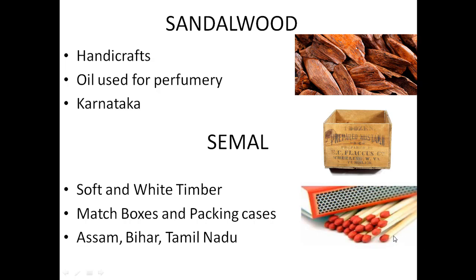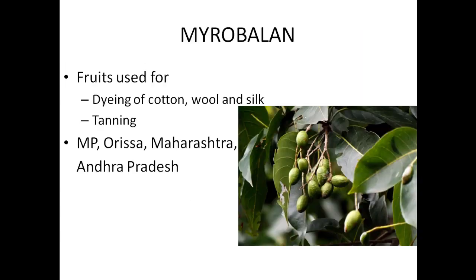Semel wood is not very hard, but due to its soft nature and capacity to absorb moisture it has been used for making tea chests. Another species found in deciduous forest is Marabaline. The fruits of Marabaline trees are used for dyeing cotton — it is a natural dyeing agent. It is also used for dyeing wool and silk and for tanning purposes — meaning leather tanning. It is mainly found in the states of MP, Orissa, Maharashtra, and Andhra Pradesh.